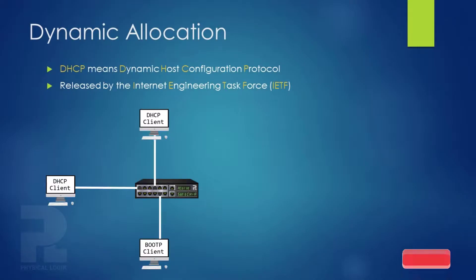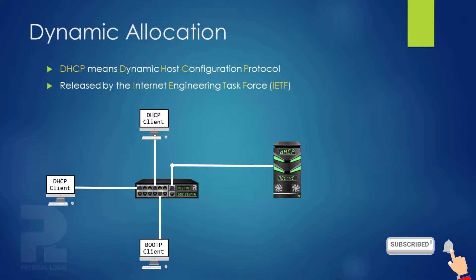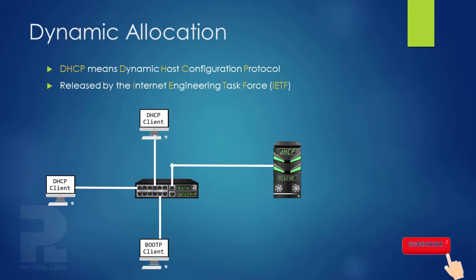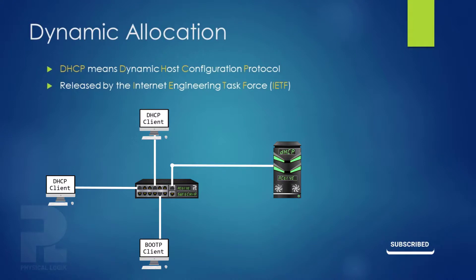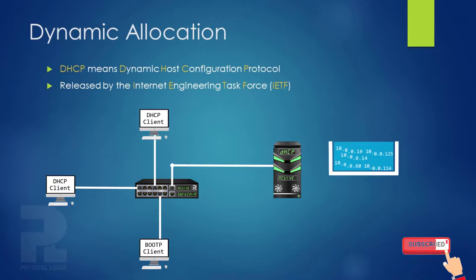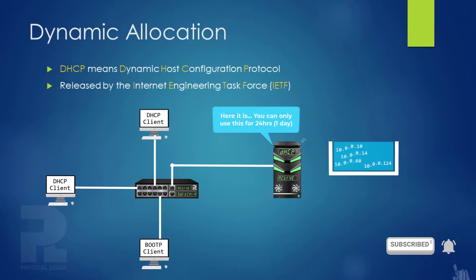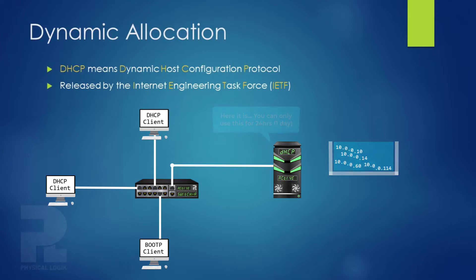The third method is dynamic allocation. A protocol under this category is the Dynamic Host Configuration Protocol, or DHCP. DHCP is an application layer protocol released by the Internet Engineering Task Force as an extension of BootP. A DHCP server is configured to dynamically assign an IP address and other network configuration information to a DHCP-enabled client. The DHCP protocol is compatible with BootP, so a BootP client can obtain IP configurations from a DHCP server. The server selects an available IP address from a configured address pool and leases it to the client for a specific time period. When the lease expires, the client must relinquish the IP address configuration.